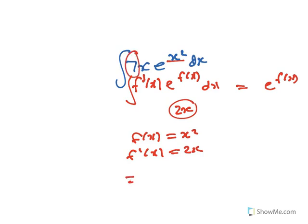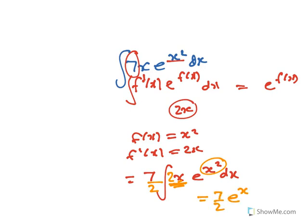So that means that 7 there is dodgy, so put it out the front, so it's ∫xe^(x^2)dx. There should be a 2 there, because the derivative of f(x) is 2x, divided by the 2, so it's (7/2)e^(x^2) + c.